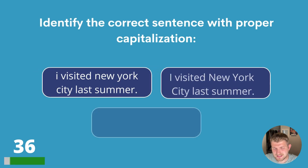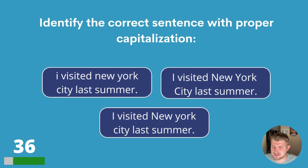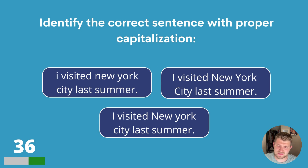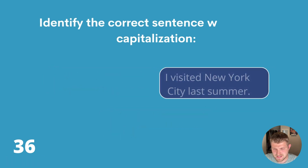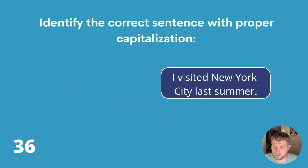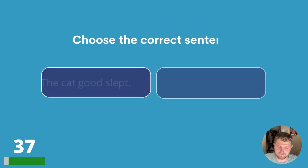Question thirty-six. Identify the correct sentence with proper capitalisation. The sentence is: I visited New York City last summer. The answer is the second one — the capital is on New, York and City, and of course I.